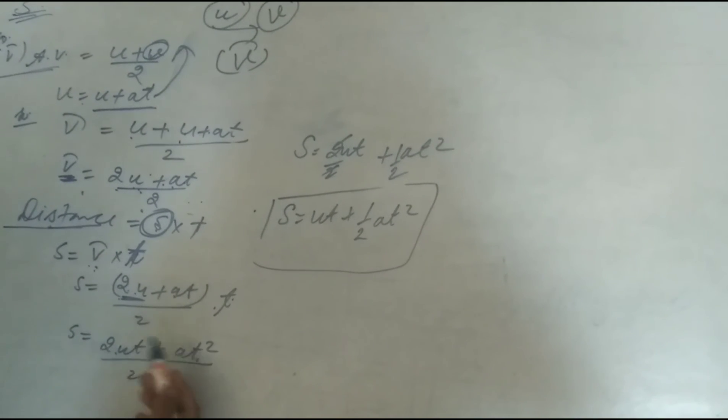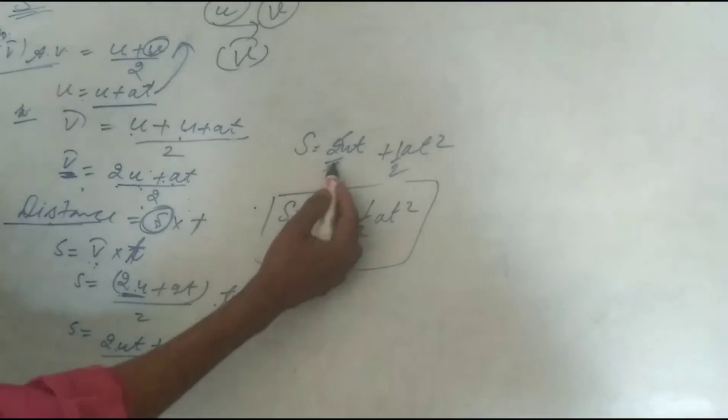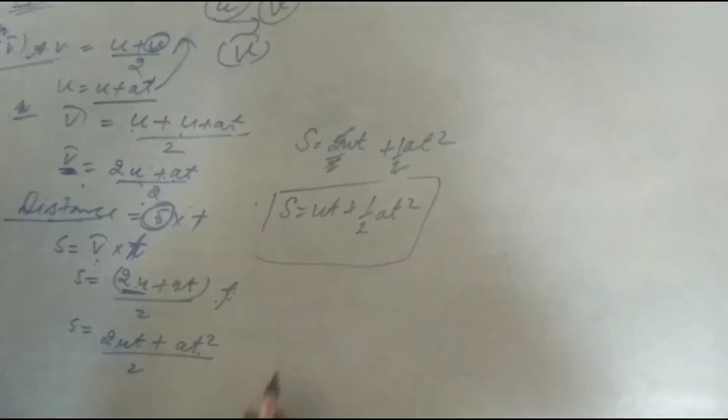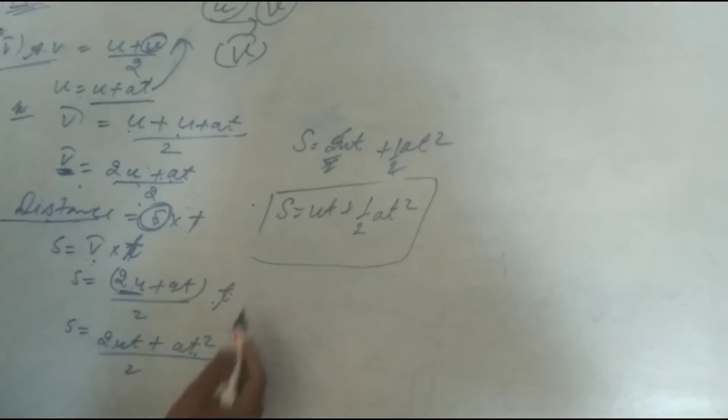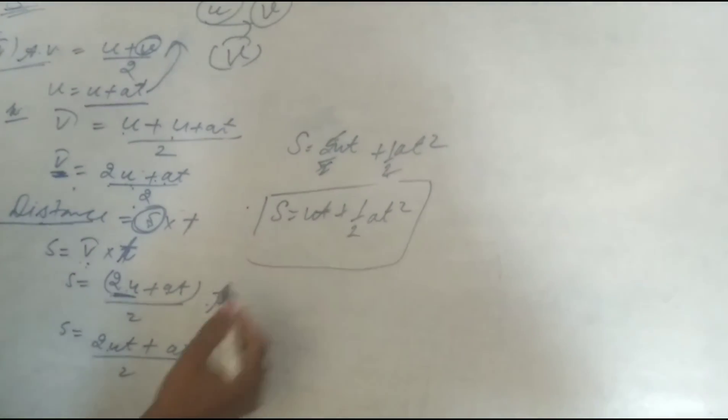Now we write separately with denominator, 2ut upon 2, 1 upon 2, at square. 2 by 2 is cancelled. So we left s equal to ut plus half at square.